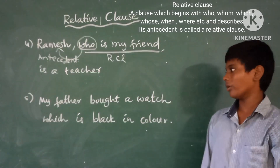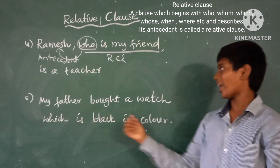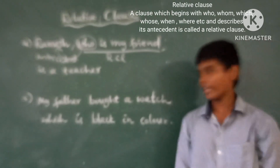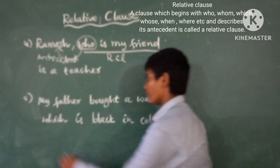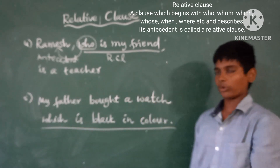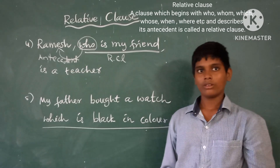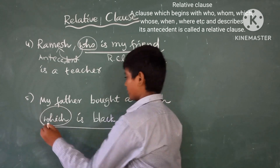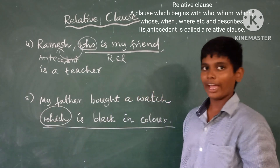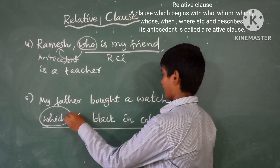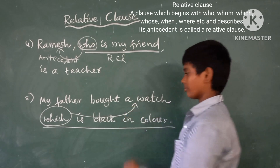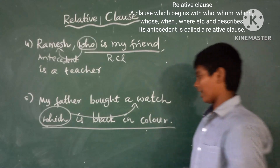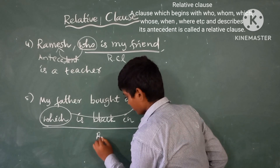Fifth example: My father bought a watch which is black in color. Here, 'which is black in color' is a Relative Clause. Why? Because it begins with 'which' and describes its antecedent, 'a watch'.